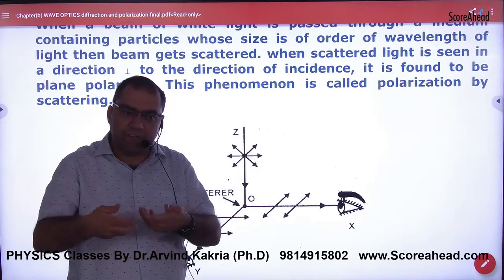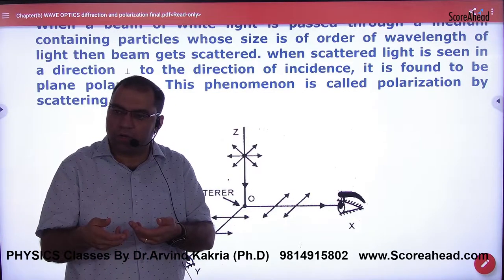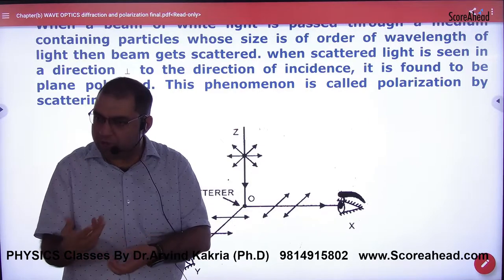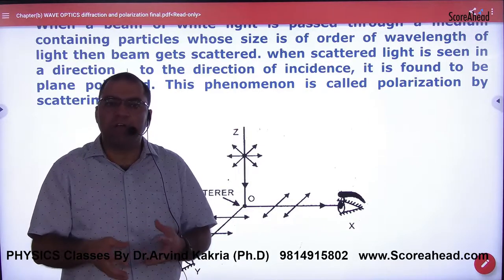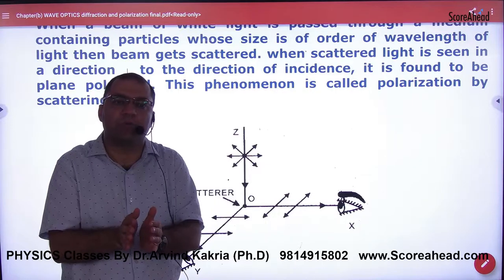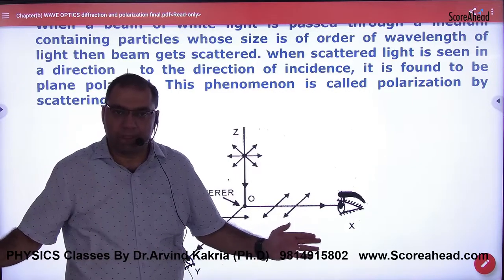The electrons vibrate because the electric field affects the electrons. So what happens? The light is scattered. It gets scattered and goes in every direction.